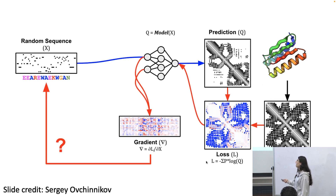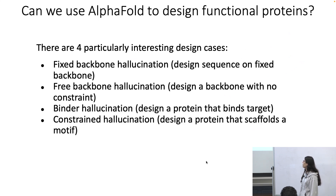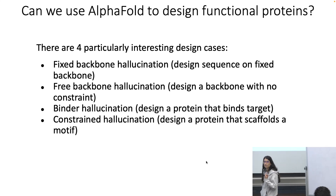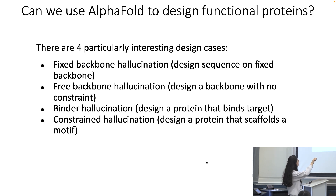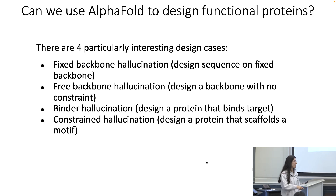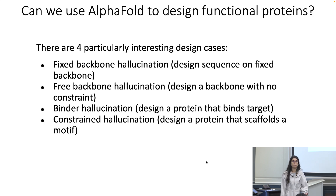Putting these into individual categories: fixed backbone hallucination designs sequences onto a fixed backbone. Free backbone hallucination designs a backbone with no constraint from a target histogram — just produce a confident structure while modifying the sequence, ending with a fully hallucinated backbone geometry and sequence. For binder design, the constraint is providing the structure of the target you want to bind, so you hallucinate a binder rather than doing unconstrained free hallucination.